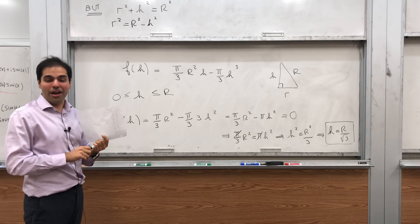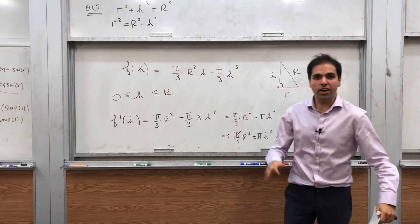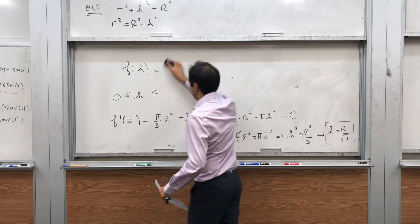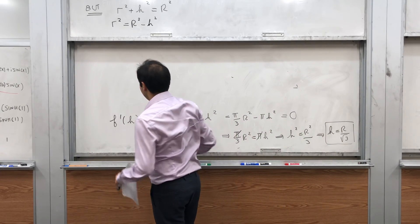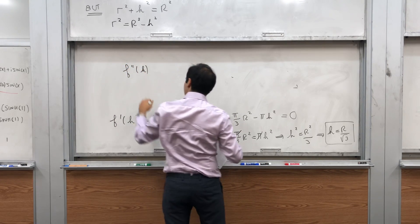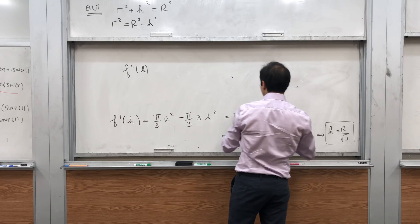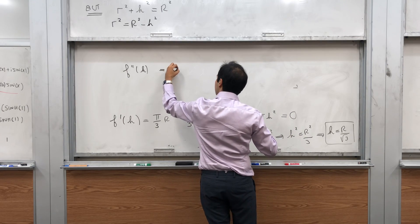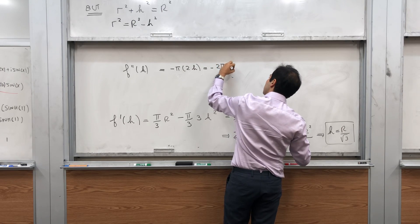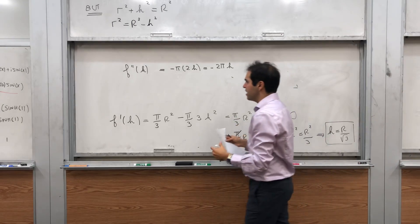So we found a critical point. It's possible that this is actually a minimum or even a saddle or something. So we have to check also the second derivative, which is not too bad. Because look, the second derivative here is f double prime of h. This is 0 because it's a constant. And you get minus 2 pi h. In particular, at this point, f double prime is negative. In fact, it's always negative.